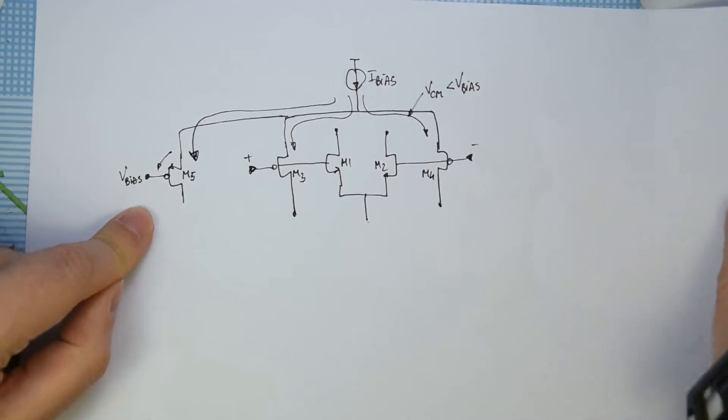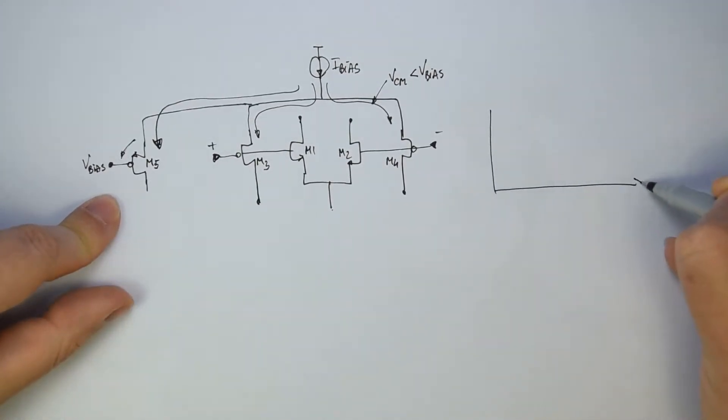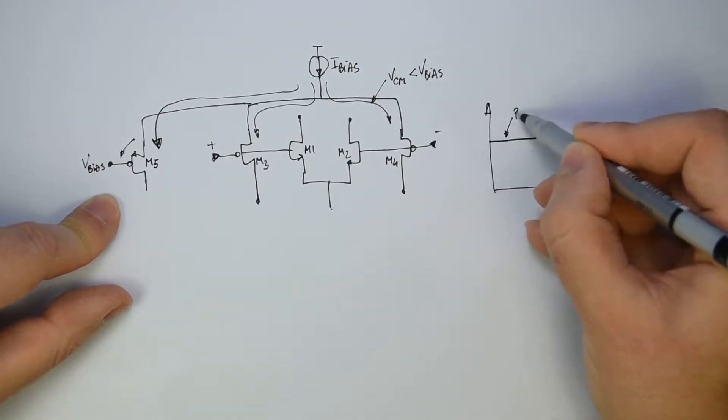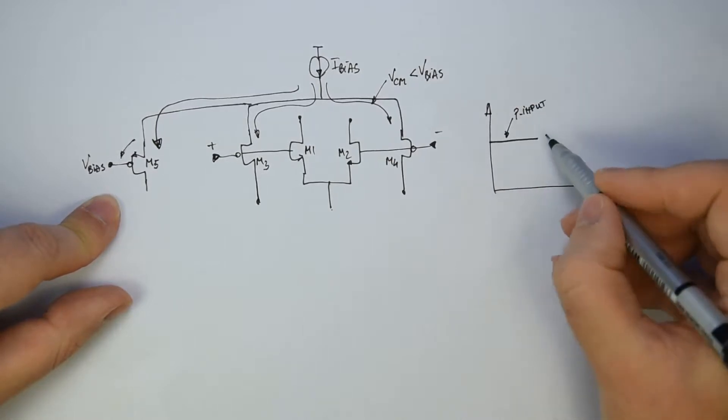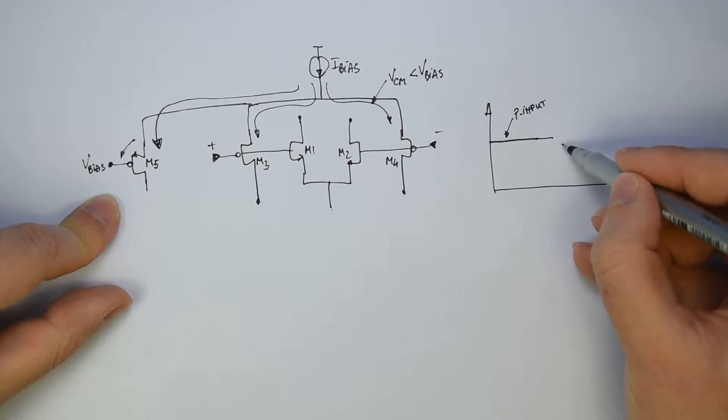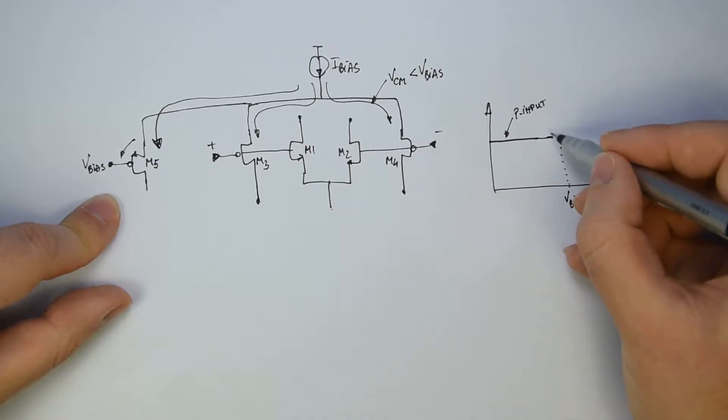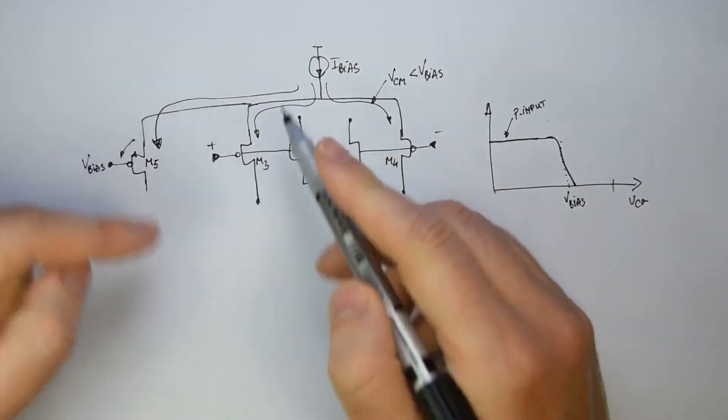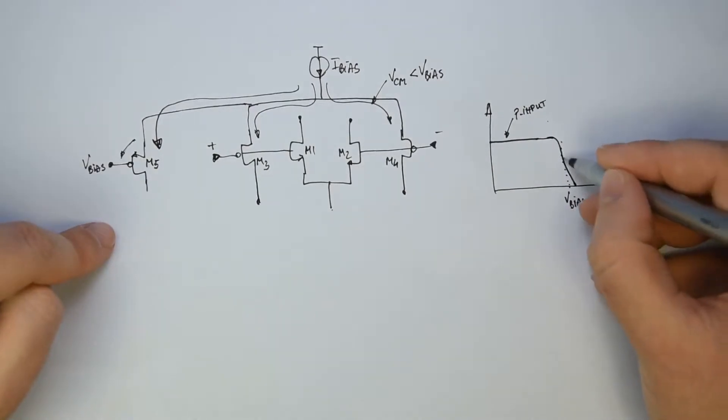Now, if we make the diagram like before, the GM versus the common mode, we have a certain value for the PMOS input. And at a certain moment, when we reach the Vbias threshold, we go with the GM quite fast because it's a switch. You can go quite fast to zero. But now, okay, we realize the fact that the PMOS is fully off from voltages between the Vbias and the VDD.